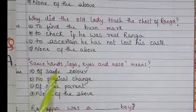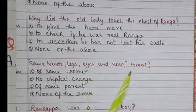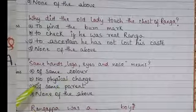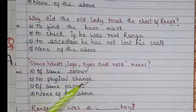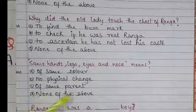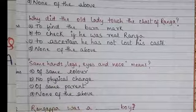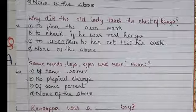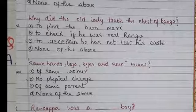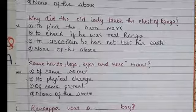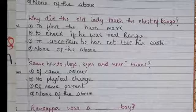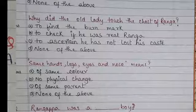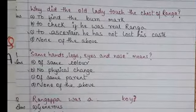'Same hands, legs, eyes and nose' means: Option A: Of same color, Option B: No physical change, Option C: Of same parent, Option D: None of the above. Option B is correct — it means there is no physical change. He had the same hands, same legs, same eyes and nose as before. This comparison has been made in a funny way.